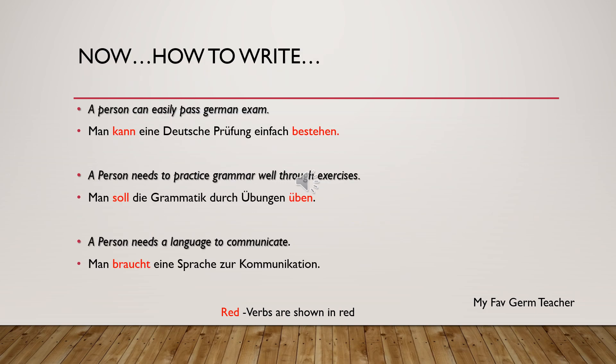Now let's learn how to write simple English sentences and convert them to German. A person can easily pass the German exam: 'Man kann die deutsche Prüfung bestehen.' A person needs to practice grammar well through exercises: 'Man soll die Grammatik durch Übungen üben.' Note that 'Übungen' is a noun, that's why it's written with a capital letter, and 'üben' means to practice.